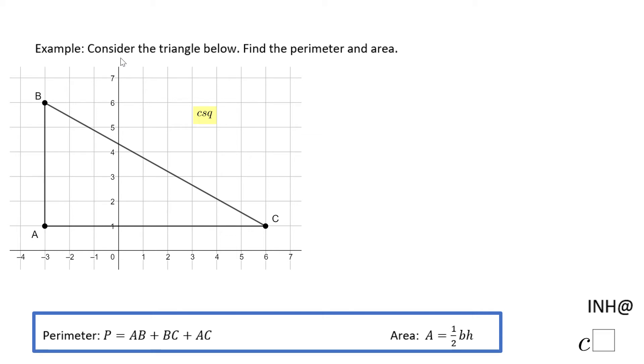Welcome or welcome back at I Need Help at Cisco. In this example we have a triangle, a special triangle by the way, and we need to find the perimeter and the area of this triangle.